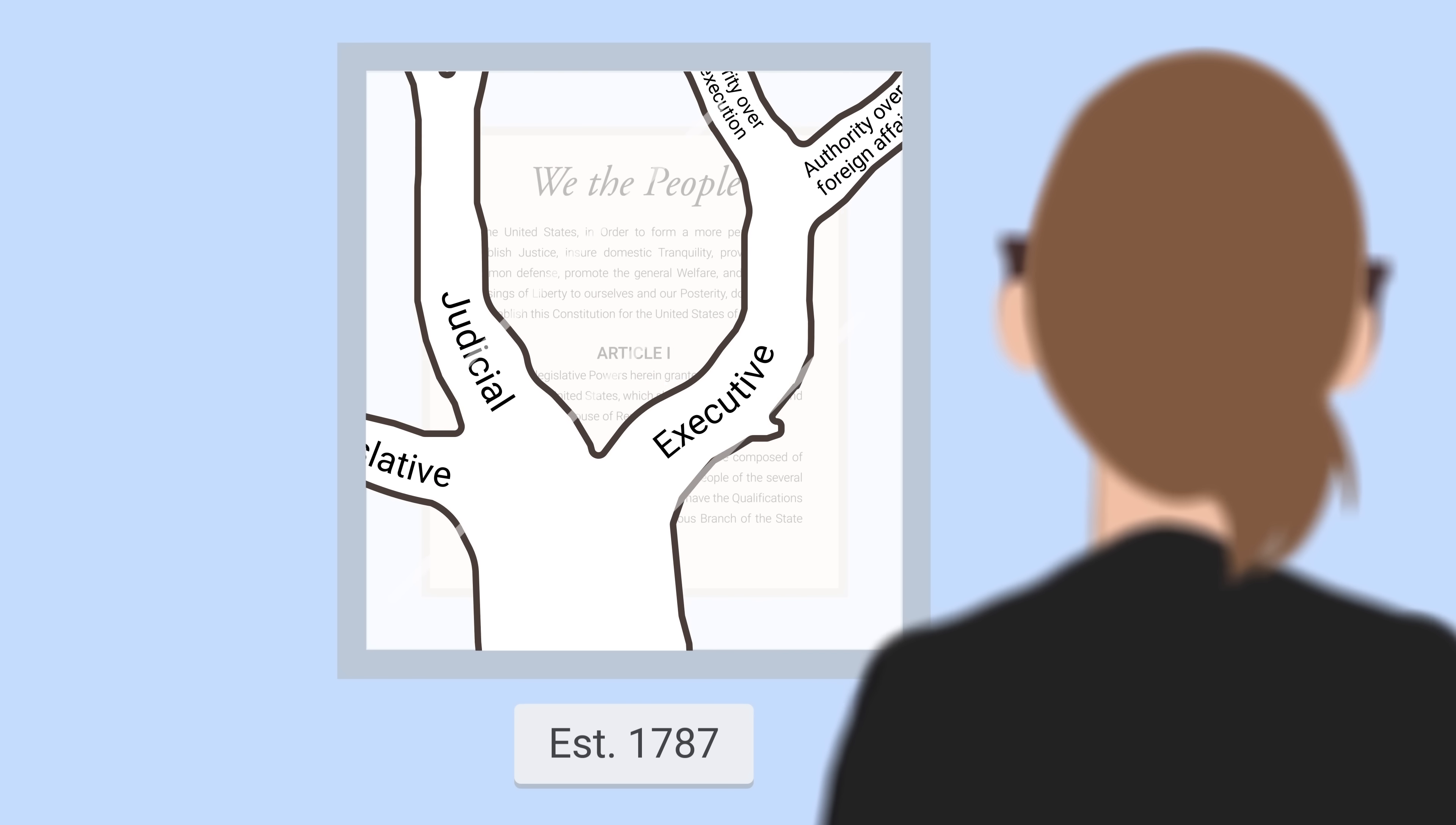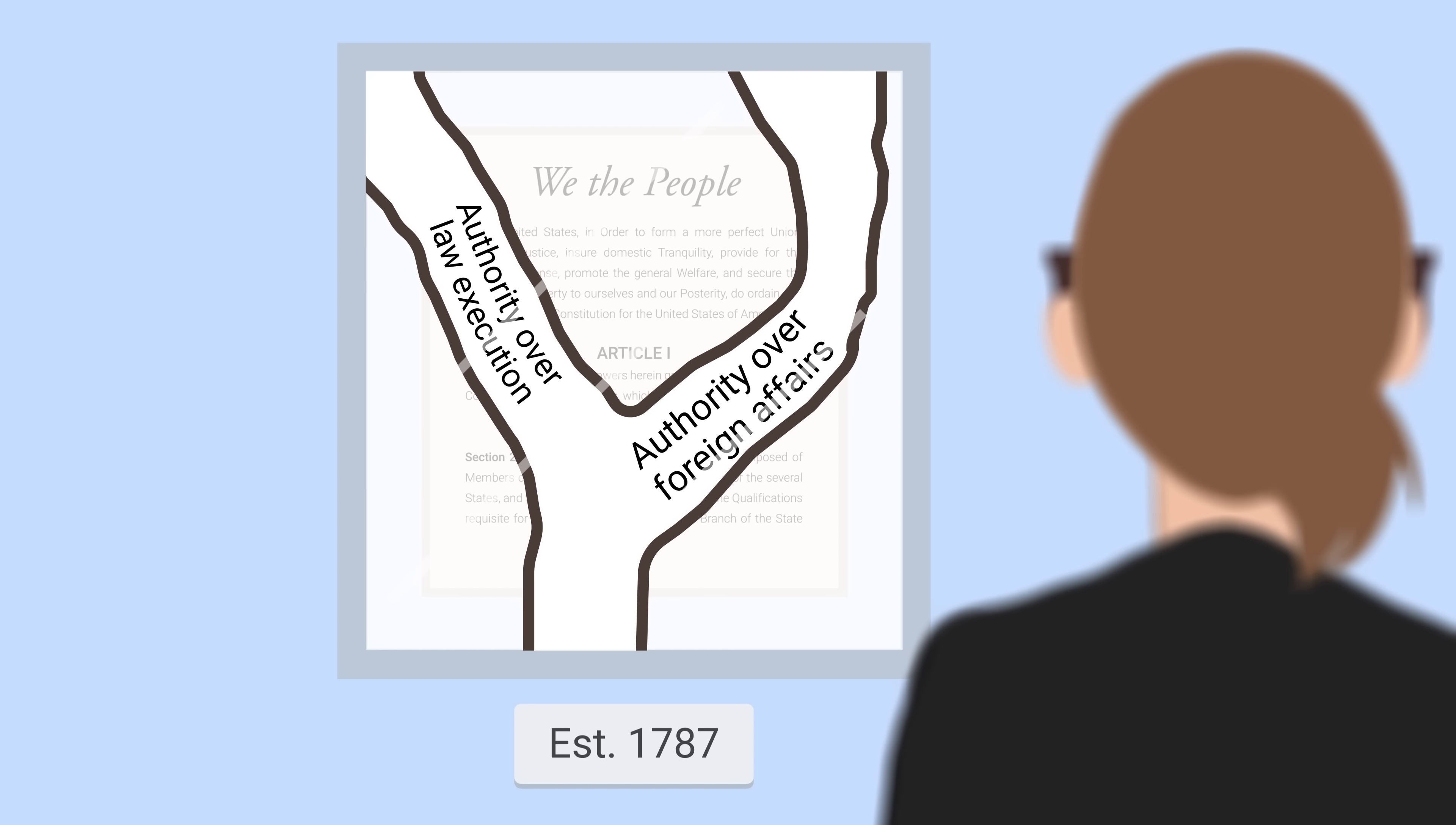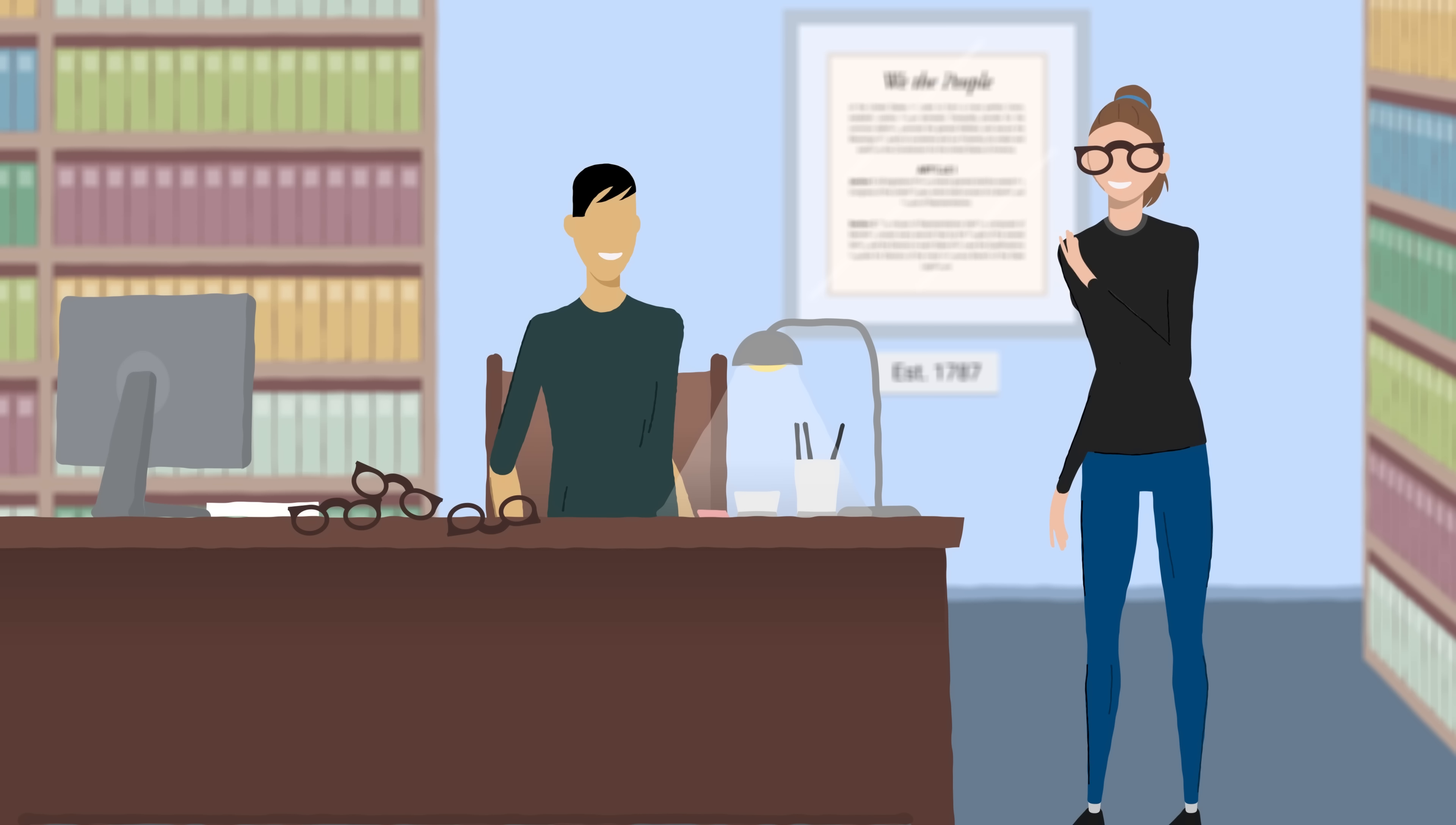So for instance, the president's given the executive power in Article 2. That at the founding meant authority over law execution and authority over foreign affairs. But if you had a living constitutional approach to what executive power meant, that could cover the legislative power and that could cover the judicial power.